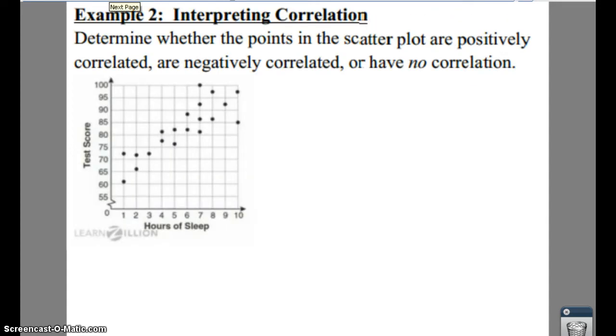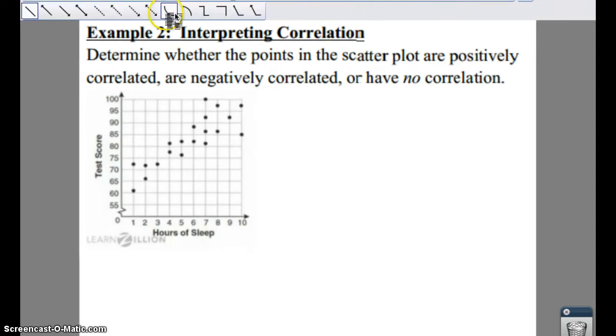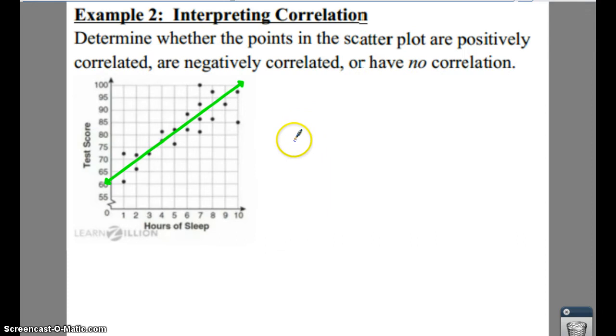So if you're given a graph, such as example two, and you have to determine whether you have a positive or a negative or no correlation, what you do is you look at this graph and it kind of looks like you can draw a line going up through your data points, like so. That's not too bad. And if you do that, then that really kind of looks like you have a positive correlation.